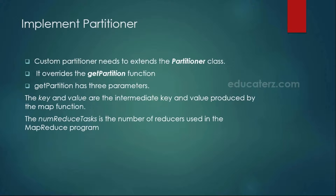In this getPartition method we write our business logic. For example, in the word count you can check the character at position zero — if it starts with A to I, send the results to the first reducer. This method has three parameters: the key, the value, and the number of reducer tasks. The number of reducer tasks — if set to 3 — means 3 different reducer output files will be created.